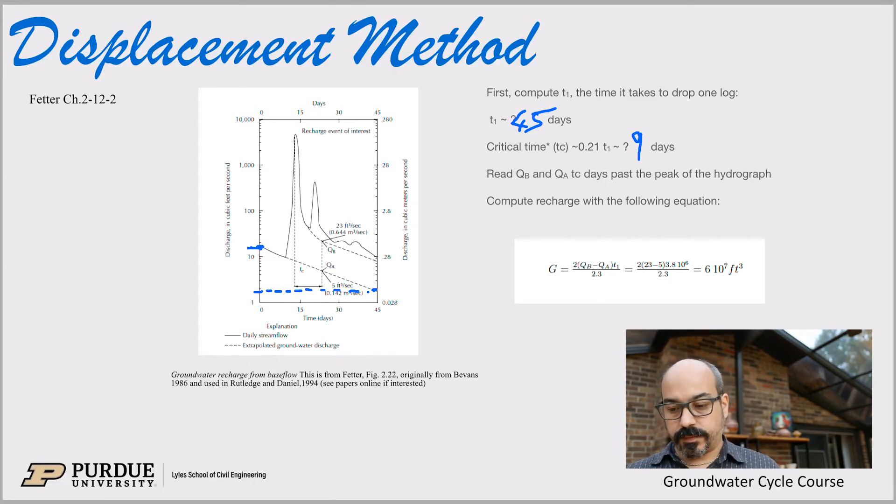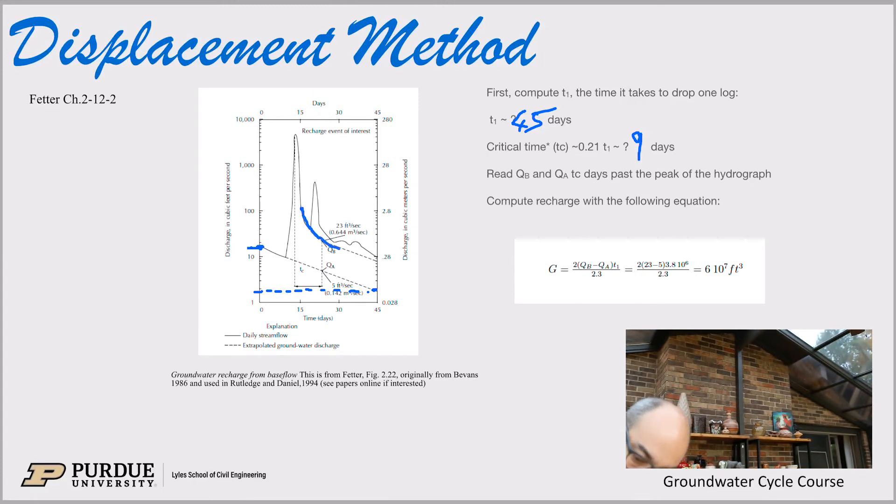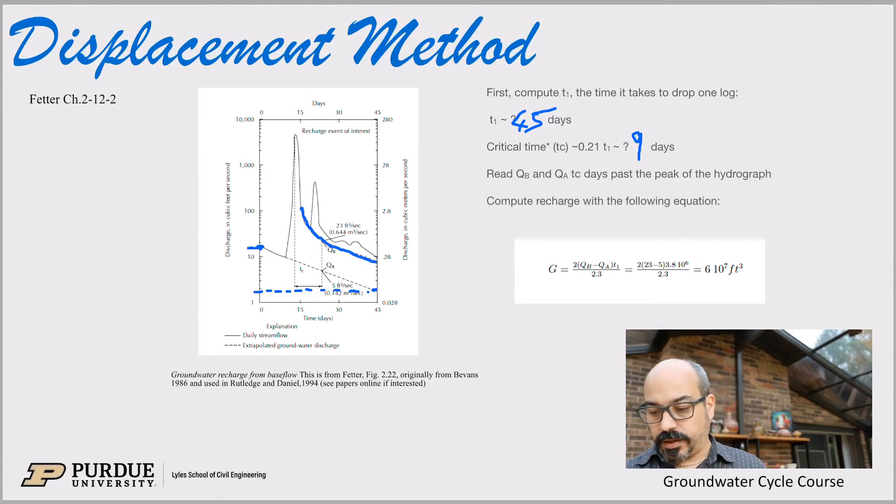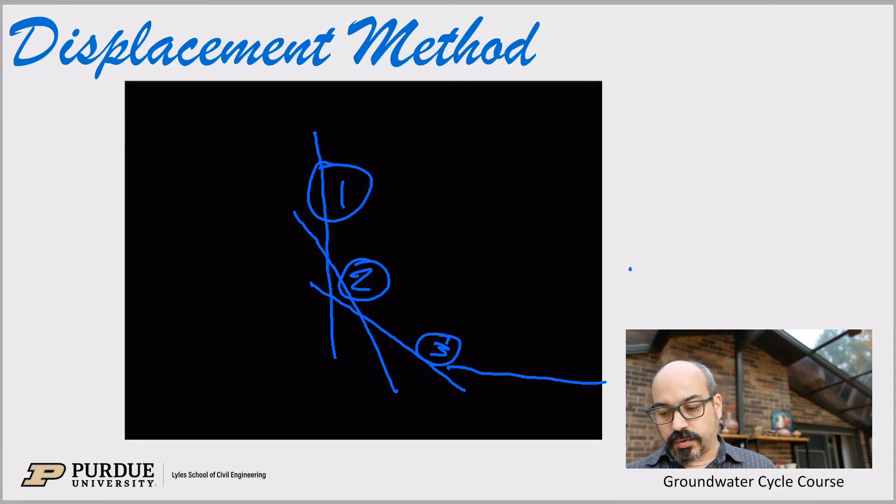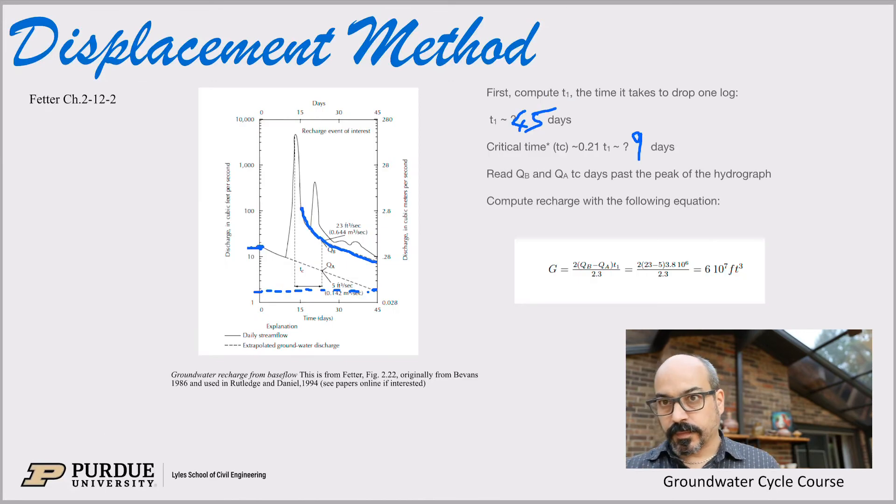Then you read the discharge at TC. So at TC, again, this is the critical time after the peak, so 9 days after the peak, you read what the discharges are. Now, notice here that there's a second rain event. So what you want to do is interpolate this first slow recession here as if it was continuing. So again, that's where you need that 1, 2, 3, that third sort of slope so you can interpolate if there's a second rain event. If there's no other rain event, then that's fine.